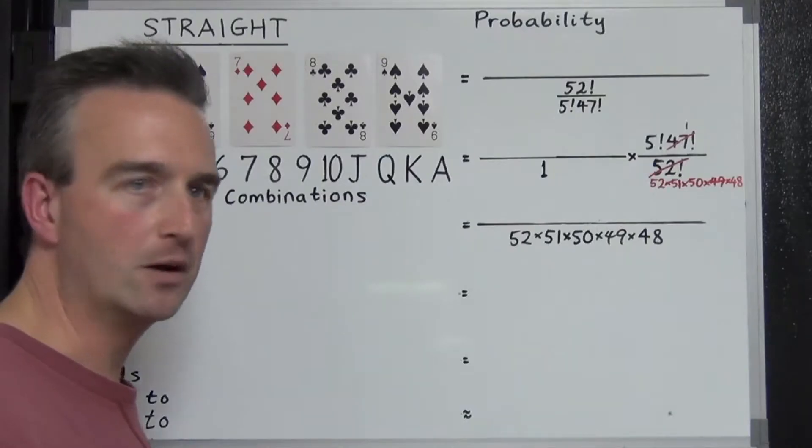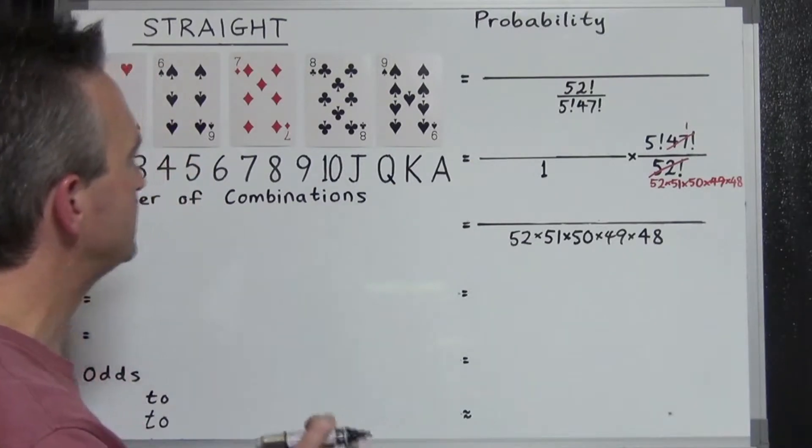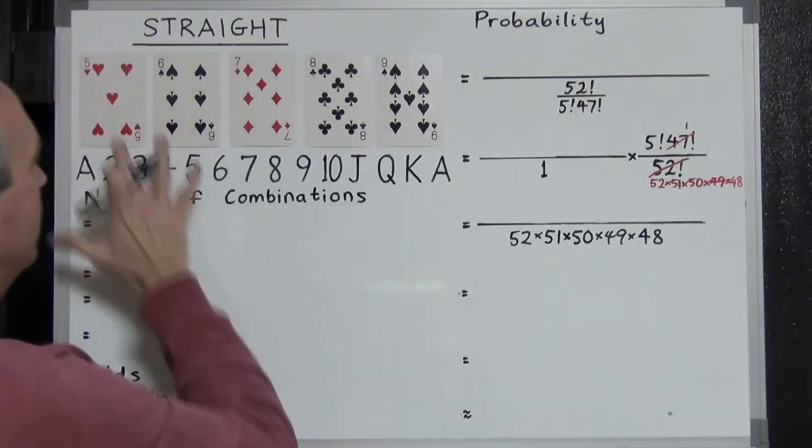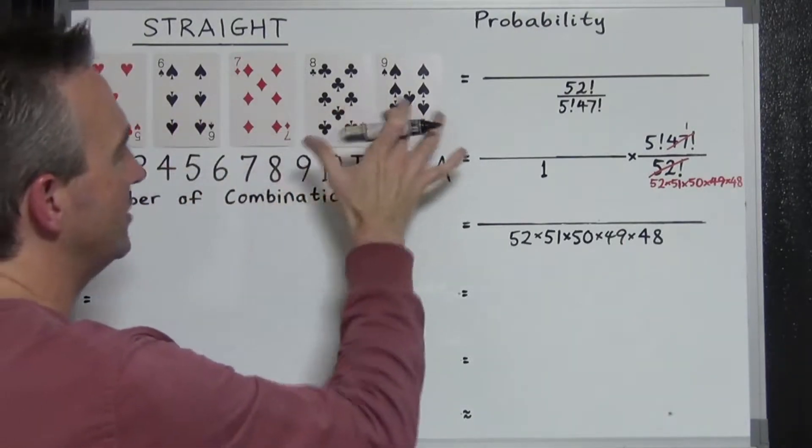So right off the bat, what is a straight? A straight is when we have five cards all in sequence of their ranks. So for example here, five, six, seven, eight, nine.